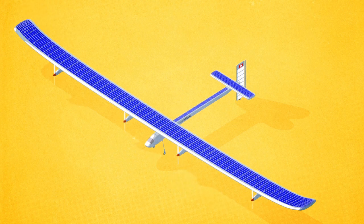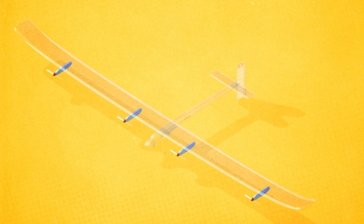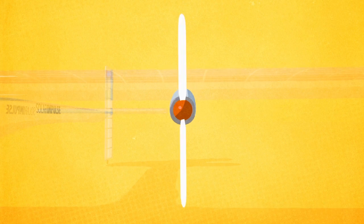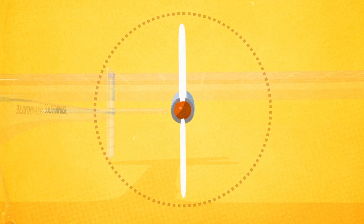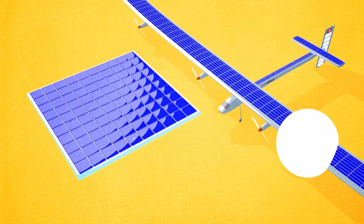Solar Impulse 2 has four electric engines, each with a propeller measuring four metres in diameter. The engines are powered by 270 square metres of solar cells, 70,000 in total, a third more than on the original Solar Impulse.